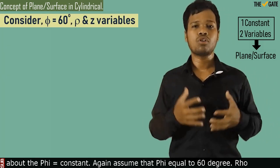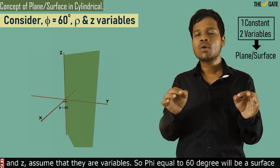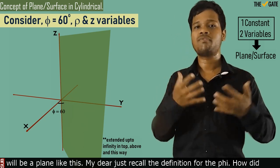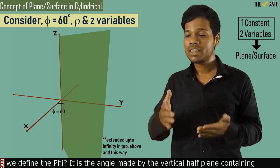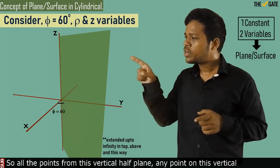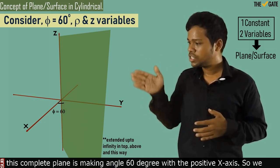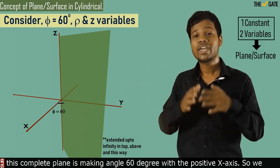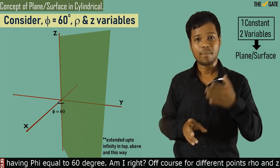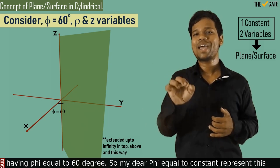Now let us discuss the phi equal to constant plane. Assume phi equal to 60 degrees, with rho and z as variables. Phi equal to 60 degrees will be a surface or plane like this. Recall the definition of phi: it is the angle made by the vertical half plane containing the required point with the positive x-axis. So all points on this vertical half plane make an angle of 60 degrees with the positive x-axis, and their phi coordinate equals 60 degrees.